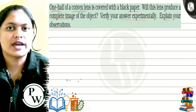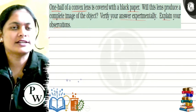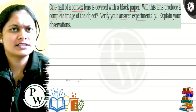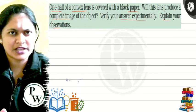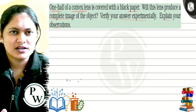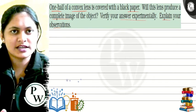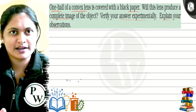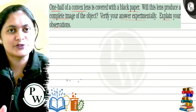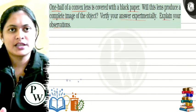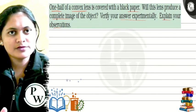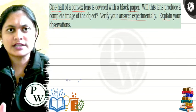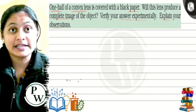So what do you think? If we cover the convex lens, will it form an image of the object? Let's check it out — will it become an image of the object or not?